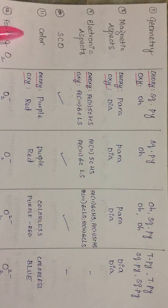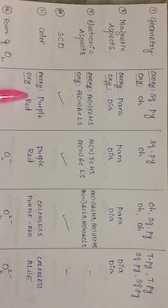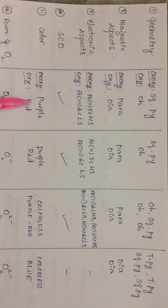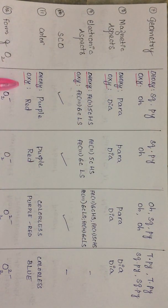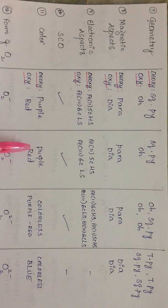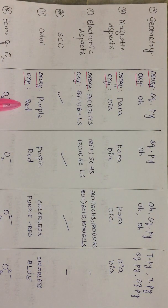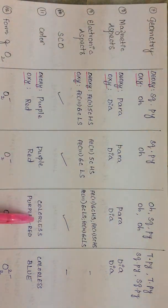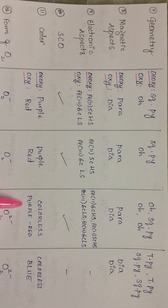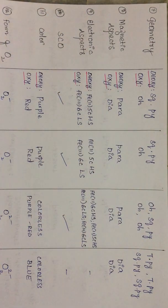Regarding color: in hemoglobin and myoglobin, the deoxy form is purplish due to interligand charge transfer (ILCT) transitions. In the oxy form, the color is red due to ILCT with some contribution from ligand-to-metal charge transfer (LMCT). Hemerythrin and hemocyanin are colorless in the deoxy form, but colored when oxygenated — hemerythrin becomes purple-red and hemocyanin becomes blue.